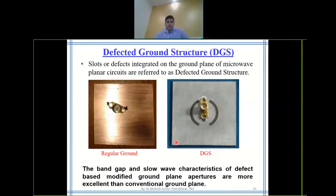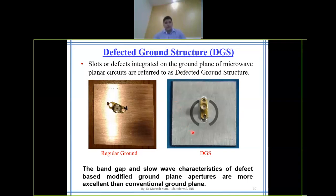In the case of a regular microstrip patch antenna or microstrip line, there is a regular ground plane with no defect, and a probe-feed SMA connector is connected. In a defective ground structure, slots or defects are integrated on the ground plane. For example, two semi-arcs can be made as defects — that is the DGS.